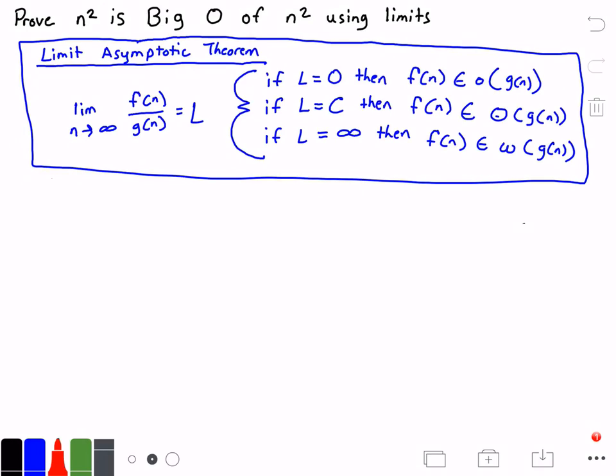In the blue rectangle here I have the Limit Asymptotic Theorem, which states that the limit as N approaches infinity of a function F(N) divided by another function G(N) equals some limit L. If L equals 0, then our function F(N) is little o of G(N).